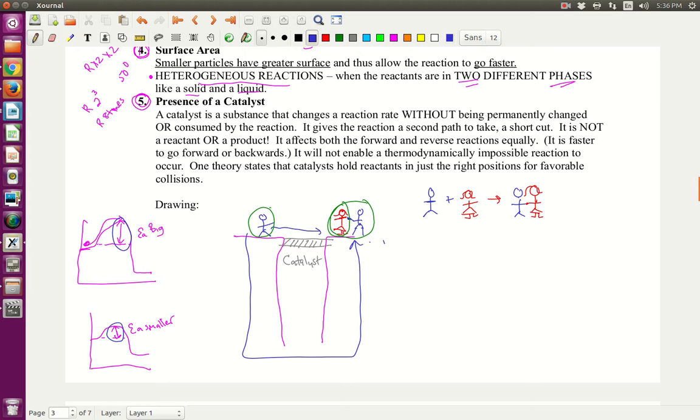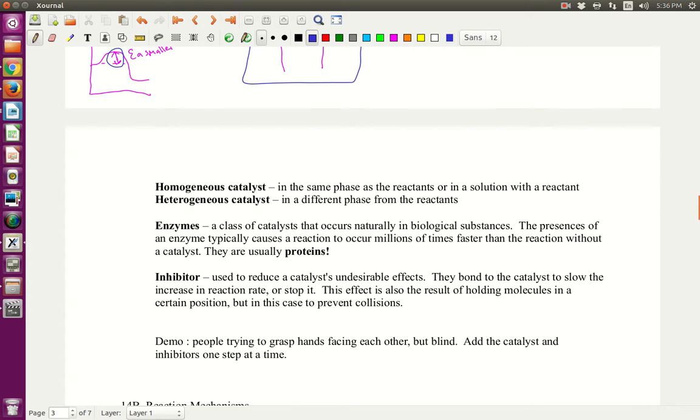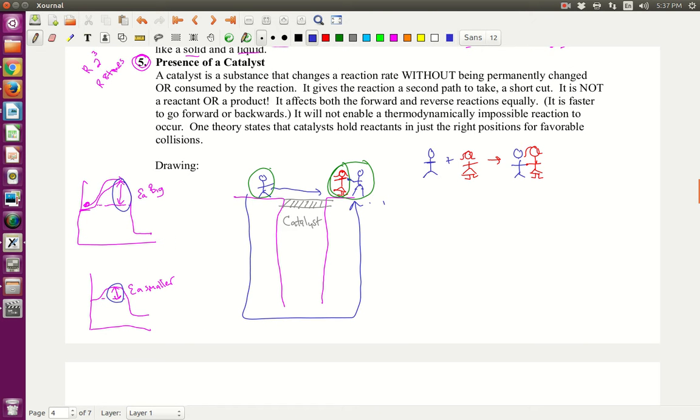Now, the catalyst is not in that reaction at all. It's just sitting there to allow this to happen faster. Okay. Now there's something else called an inhibitor. And it's a little bit farther down your notes. So we talked a little bit about there's such a thing as homogeneous catalyst. And all that means is it's in the same phase as the reactants. So if the reactants are liquids, the catalyst is liquid. If the reactants are solids, the catalyst is solid. And we have heterogeneous catalysts. It means it's a different phase. So if the reactants are liquid, maybe the catalyst is a solid or vice versa. Enzymes are a special kind of class of catalysts. They occur in biological systems. The presence of an enzyme will cause a reaction to occur millions of times faster than the reaction without a catalyst. And they're usually proteins. Now we come to this little guy here, inhibitor. An inhibitor is used to reduce the catalyst's undesirable effects. So it basically slows it back down. It blocks the places where they would get together.